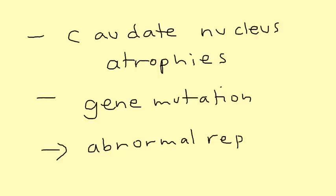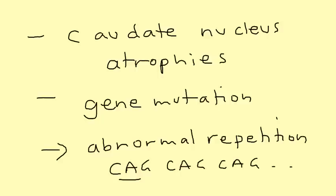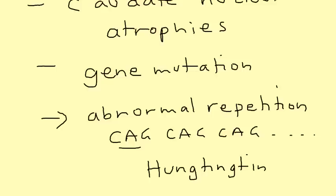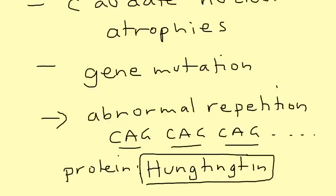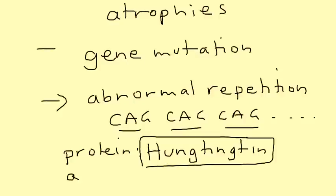That gene mutation causes abnormal repetition of a DNA sequence — very important to remember. The DNA sequence is CAG, repeating onward. That abnormal repetition results in a gene product called Huntingtin. Huntingtin is a protein, and this protein, which is the result of these abnormal CAG repetitions, is what does the damage. It accumulates in the neurons in the brain and leads to the damage.